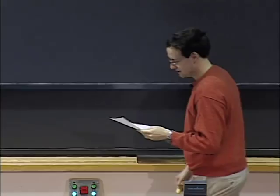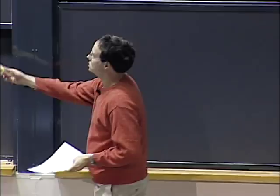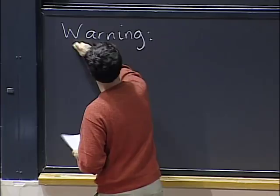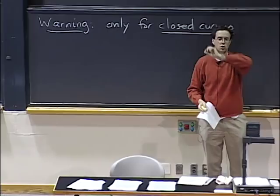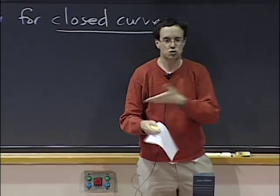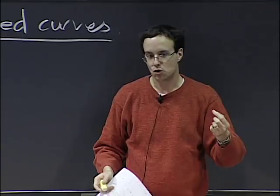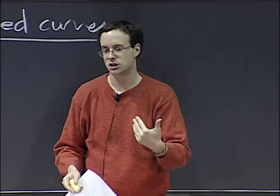There's a warning: this is only for closed curves. If I give you a curve that's not closed, you have to do it by hand — you have to parametrize the curve. Or, if you really don't like that line integral, you could close the path by adding some other line integral and then compute using Green's theorem. But you can't use Green's theorem directly if the curve is not closed.